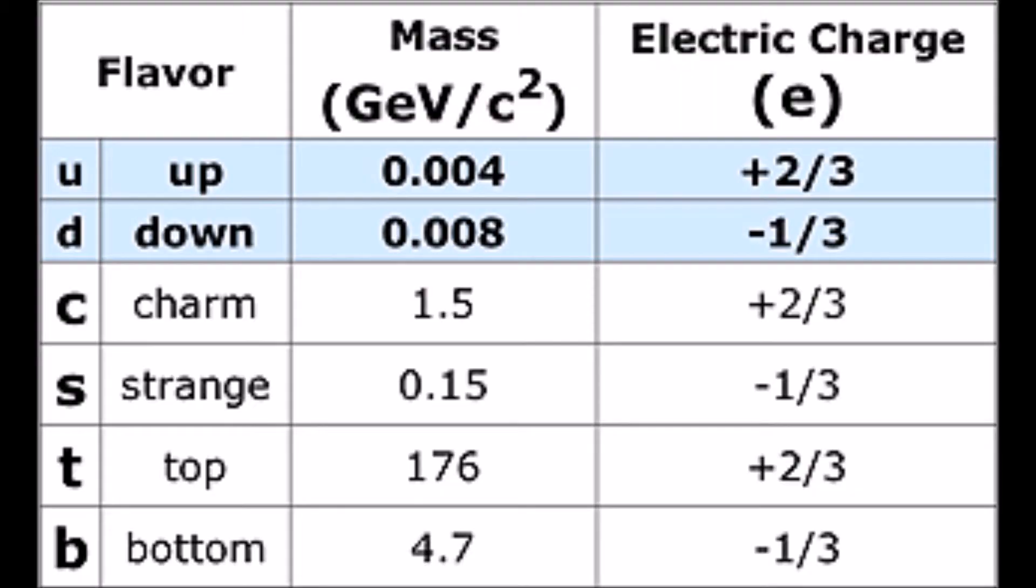There are two exceptions to this. Quarks can have charges that are multiples of one-third E, but they exist only in groups, so any isolated particle can only have charges that are whole number multiples of E.